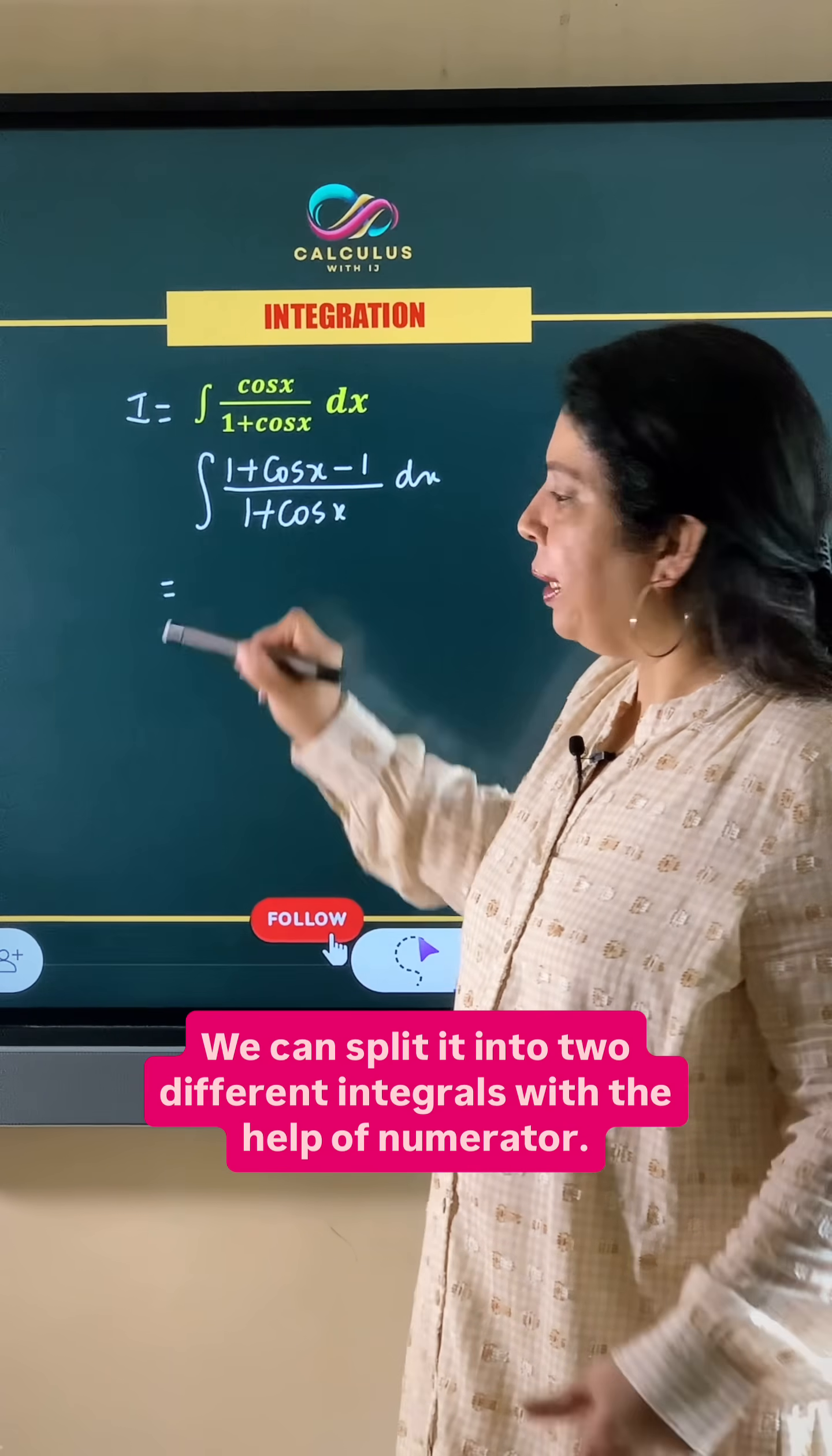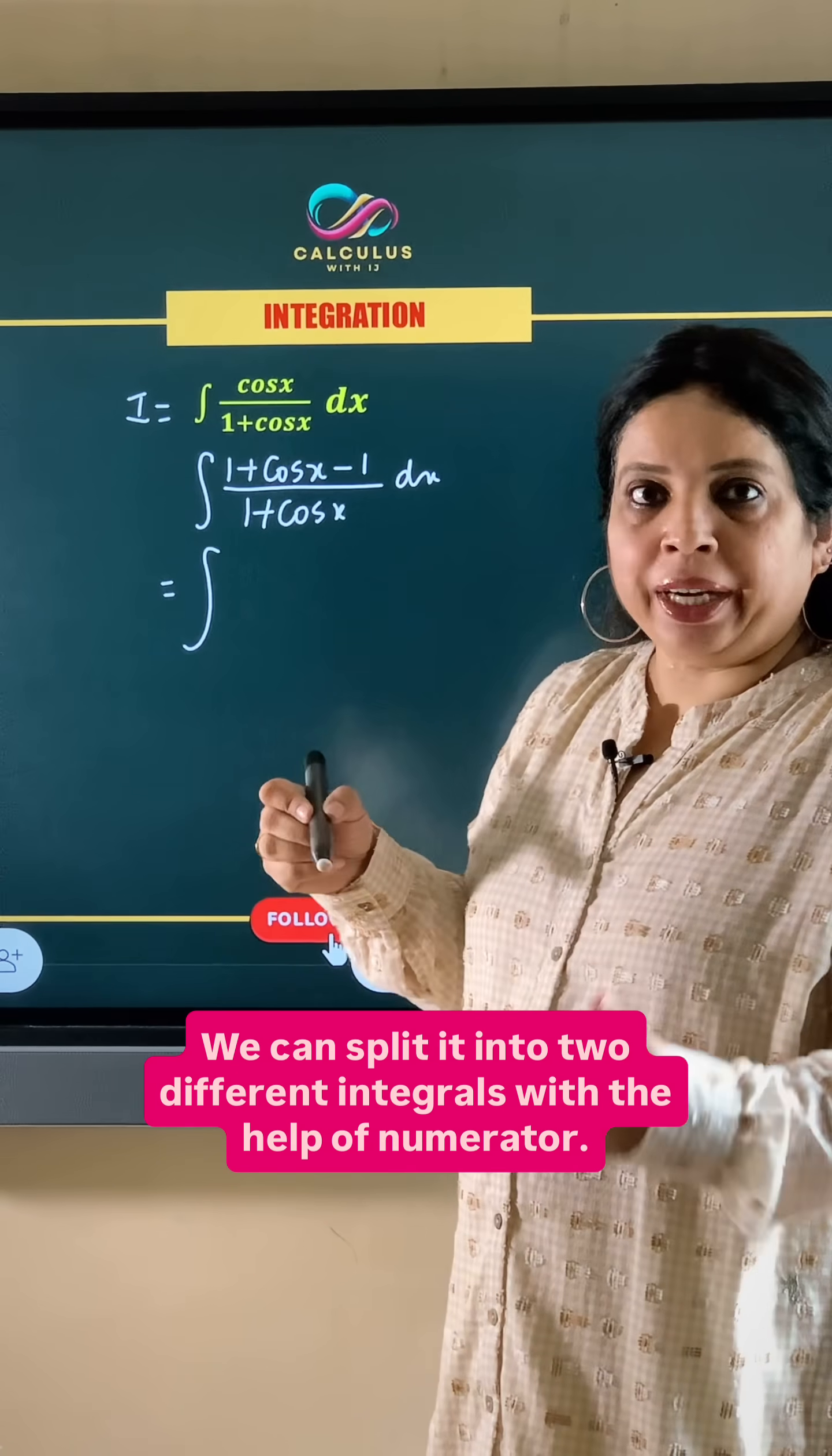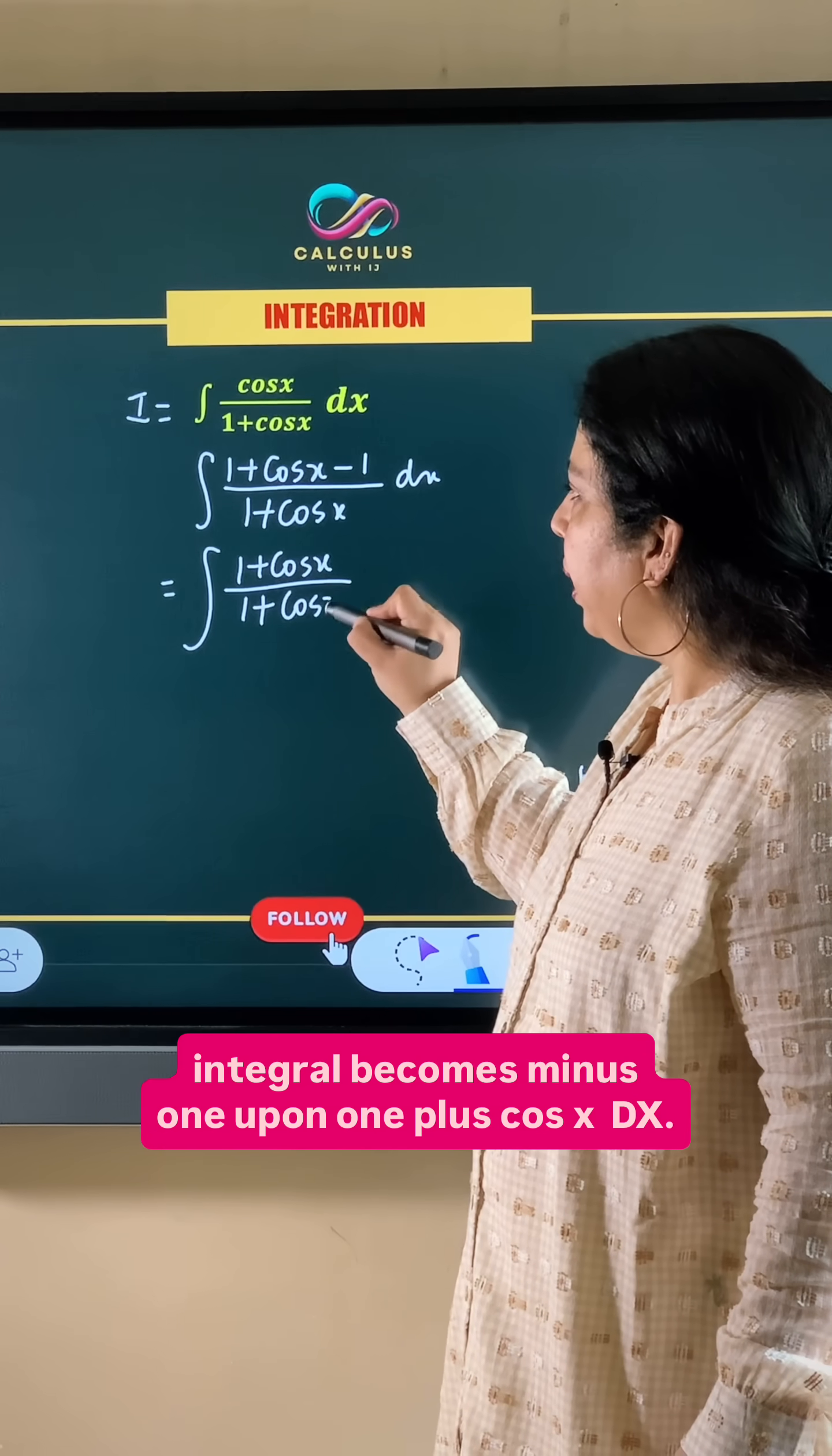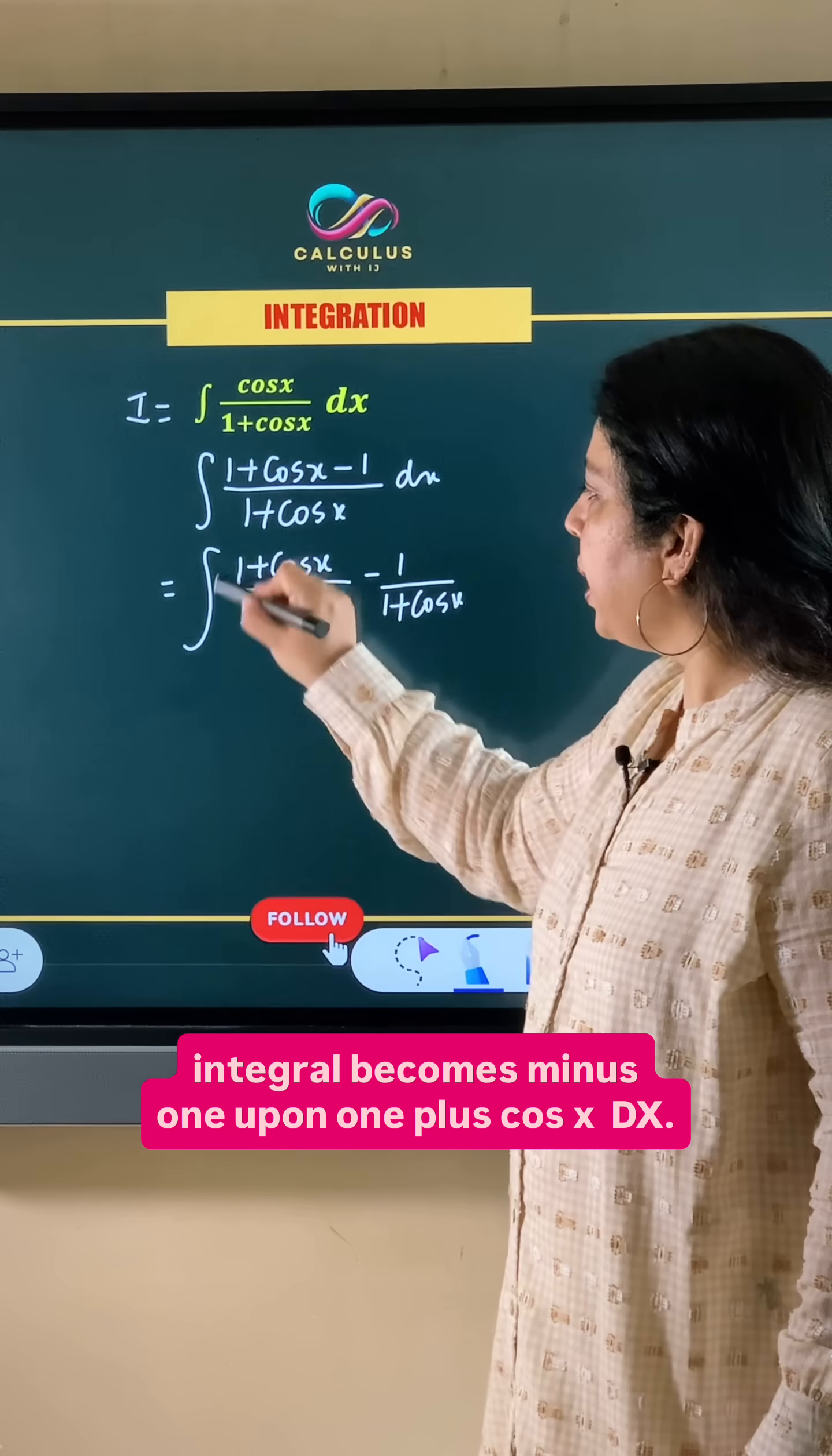We can split it into two different integrals with the help of numerator. The first integral is 1 plus cos x upon 1 plus cos x and second integral becomes minus 1 upon 1 plus cos x dx.